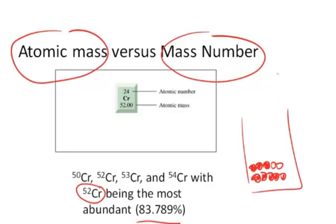And then if you had 100, 83 of them or 84 of them, depending on which hundred you picked, would be chromium 52, and the remainder would be some small fraction of those other three.